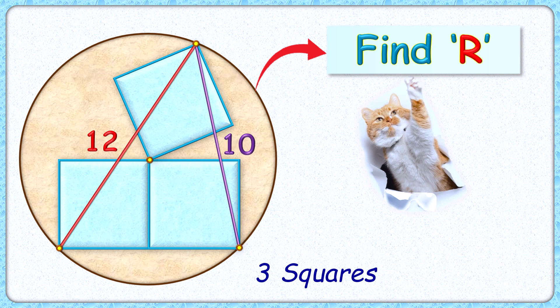Wow, this question looks really amazing. Given are 3 squares fitted inside a circle. The length of this red and purple line segment is given as 12 and 10 centimeter. The exciting part is with this limited data we have to find the radius of this circle.